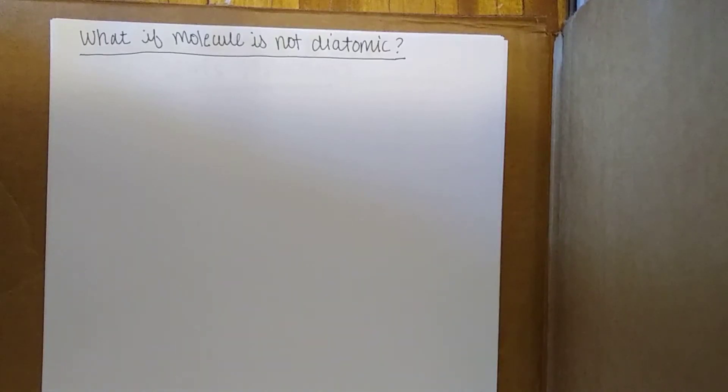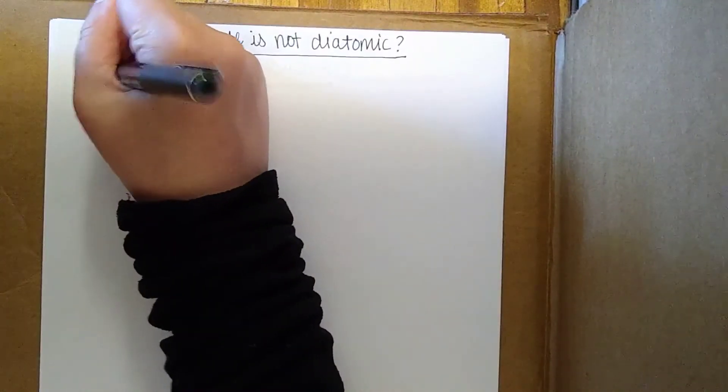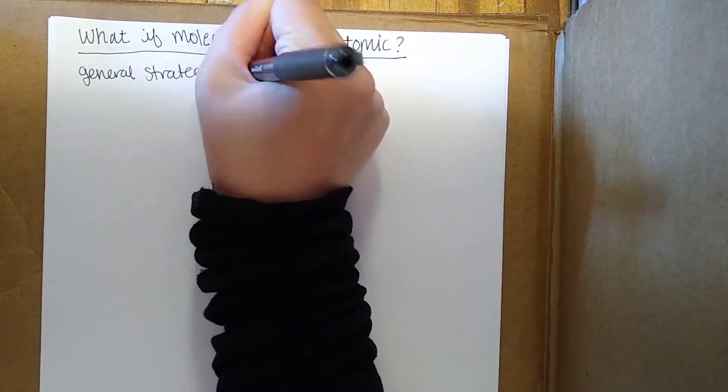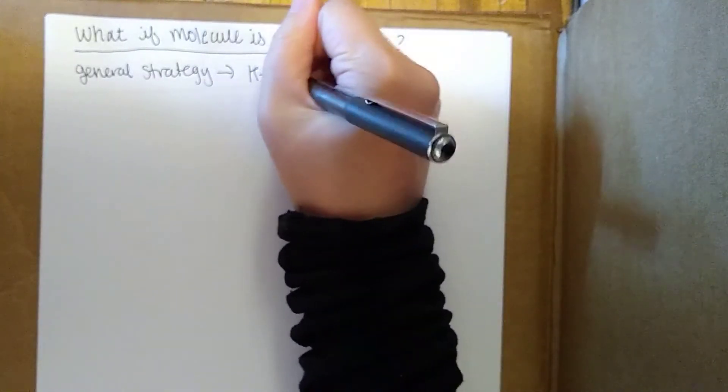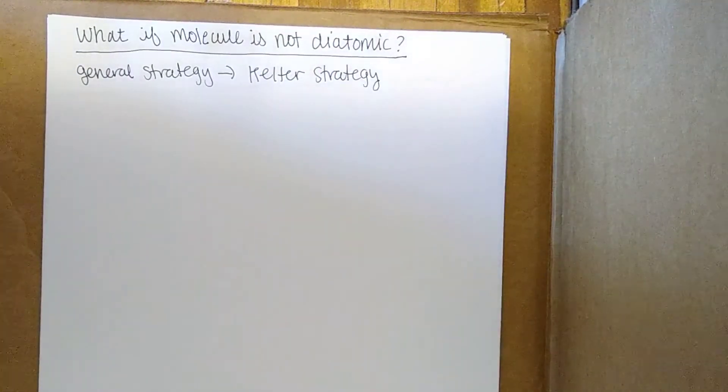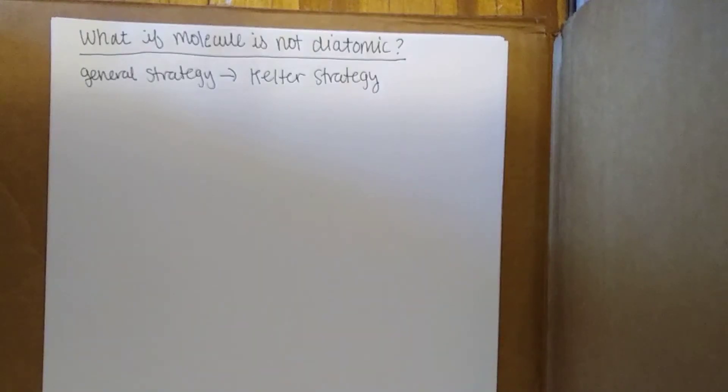So of course we can use Lewis theory to discuss molecules that are not diatomic. I'm going to go over a generalized strategy here. A general strategy is known as the Kelter strategy for drawing these Lewis structures. I'm going to go over the rules and then do an example alongside it so the rules will make a little bit more sense.